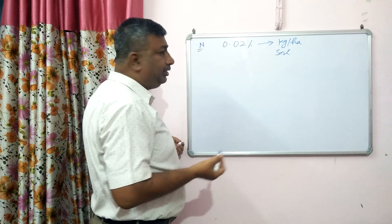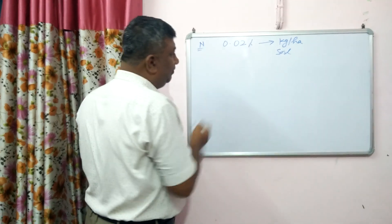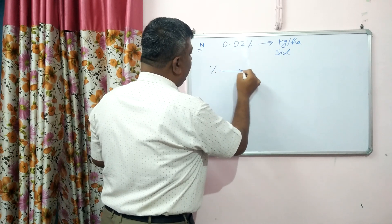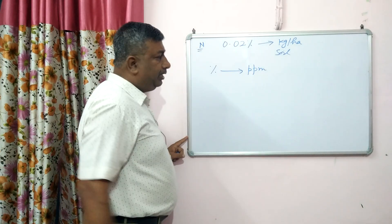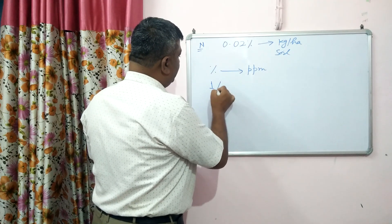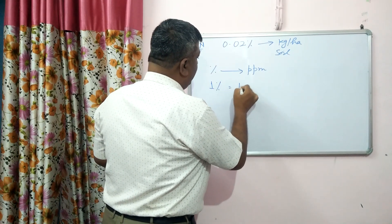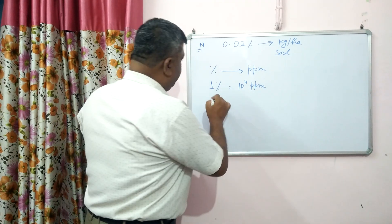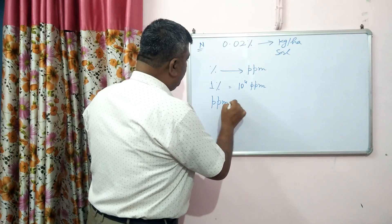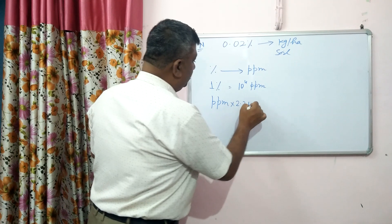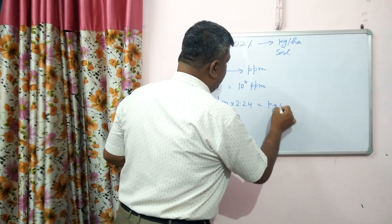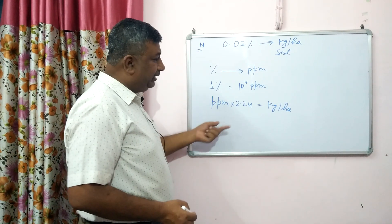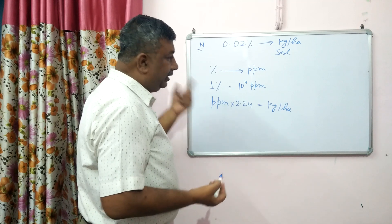So how can we convert this? For this conversion, first the percentage is converted into PPM — parts per million. The conversion is: 1% is equal to 10 to the power 4 PPM. This is the conversion formula. Then the PPM value is multiplied by 2.24, which gives the nutrient quantity in kg per hectare.